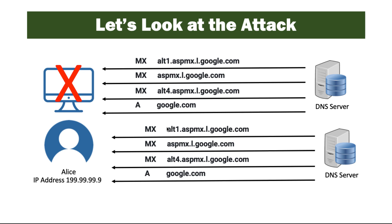Her computer will spend all this time reassembling this traffic and eventually just stop working. So if that computer happens to be hosting her website, Socks by Alice, then it will no longer be serving customers and making money. This is an attack that uses DNS servers in a way they weren't intended, to make a website unavailable — it's really an attack on availability, and it's one of the harder ones to defend against because it is a denial of service attack.